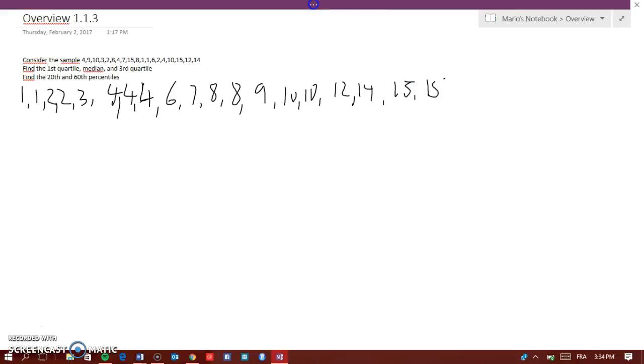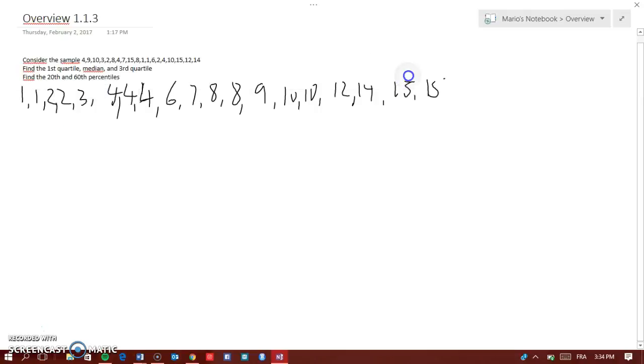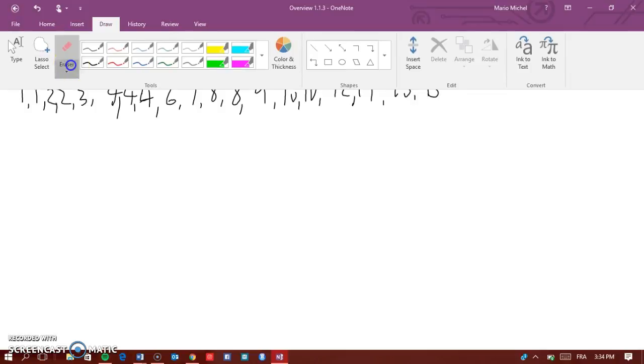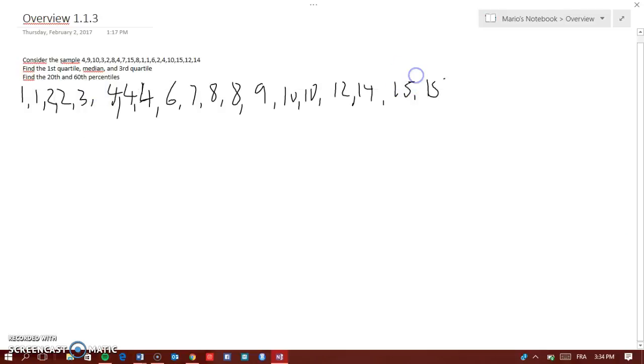This is the sample. So, now, how do we find the first quartile? Remember, the first quartile is the 25th percentile. What you have to do is, there is a formula that says, what you're going to do is do the n plus 1 times the p. n is the number that you have, here we have 19.